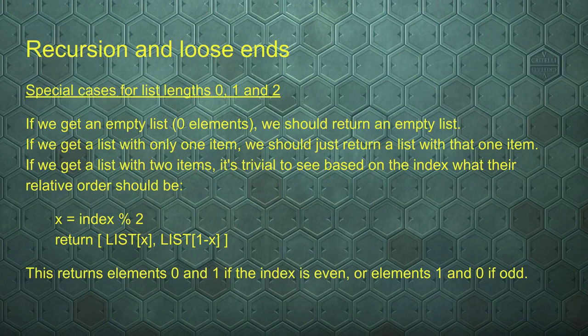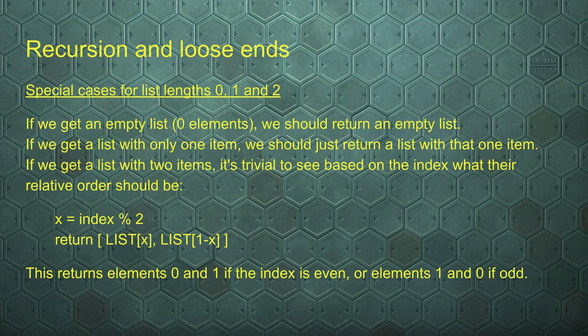And if we get a list with 2 items, it's really rather trivial to see based on the index what the relative order should be. If we set x to be the index modulo 2, we get either 0 or 1 for even or odd numbers. And if we return element x first and then element 1 minus x, we would always get elements 0 and 1 in that order if the index was even, or elements 1 and 0 if the index was odd. So that's how we handle the base cases for list lengths 0, 1, or 2.